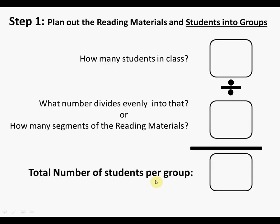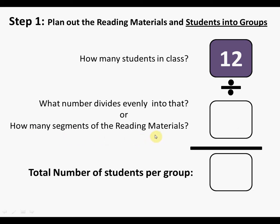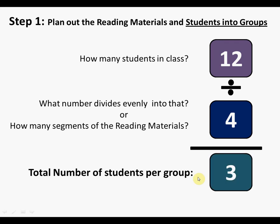Next, look at how to split the students into groups. How many students are registered for class? In a normal classroom you'll have 30 to 50 students, but for this demonstration let's say 12 students. Divide that by whatever number evenly divides into it, or do it the other way: since you already have four segments, divide 12 by 4, which equals three — so you need four groups of three students per group.